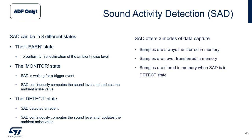When a first estimation of the ambient noise is made, SAD transitions to the monitor state. In this state, SAD waits for a trigger event and continuously computes the sound level and updates the ambient noise value. When SAD triggers, the state changes to detect. In this state, SAD continuously checks that the detect condition is still true. Even in the detect state, SAD continuously computes the sound level and updates the ambient noise value. To improve flexibility, SAD offers three options for controlling the transfer of the observed signal data to memory: samples are always transferred in memory; samples are never transferred in memory; samples are stored in memory when SAD is in the detect state.